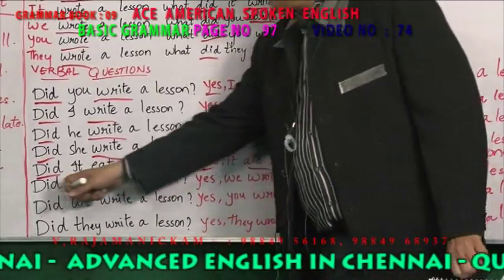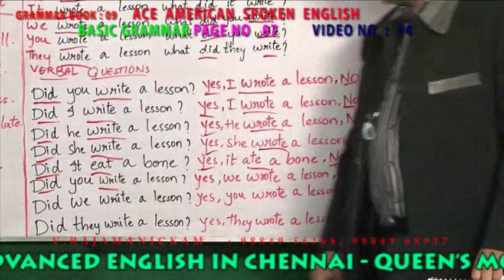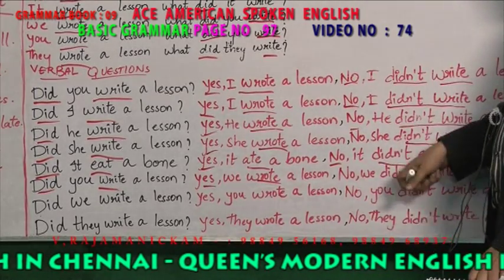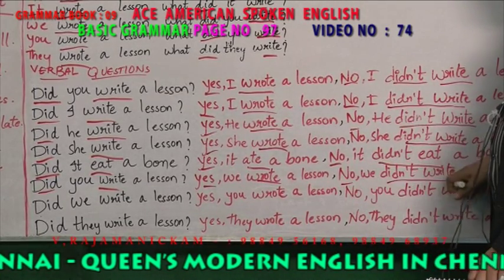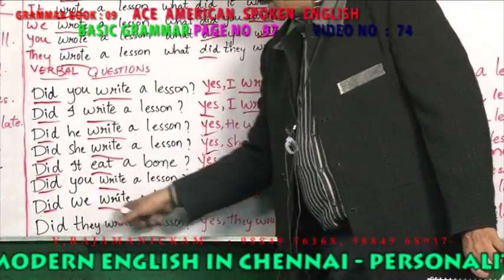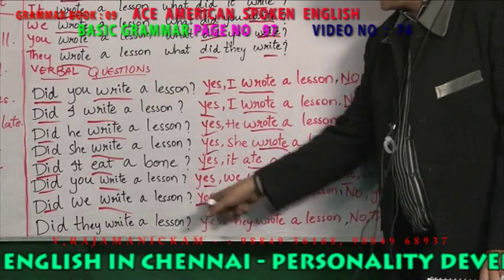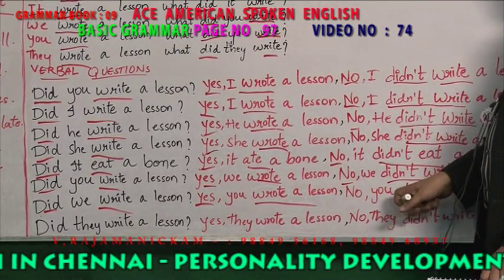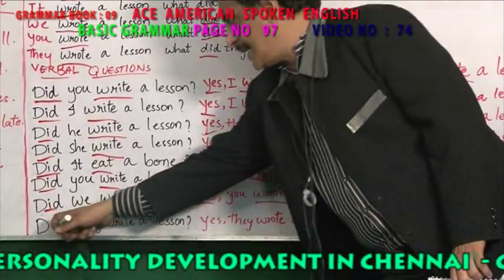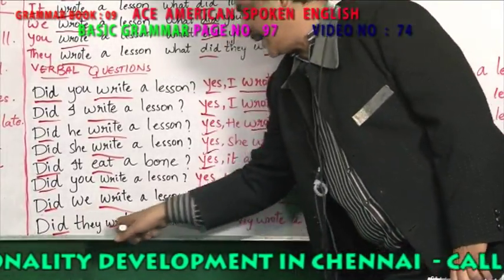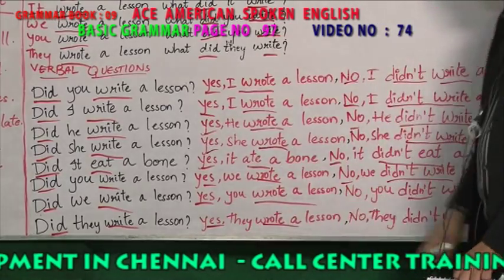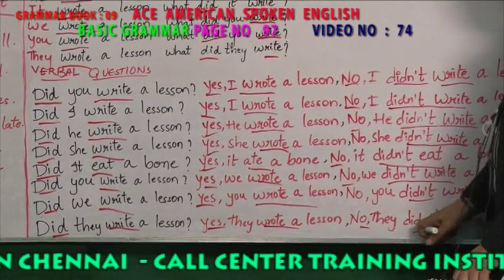Did you write a lesson? Did and write. Yes, we wrote a lesson — past tense. No, we didn't write a lesson. Did we write a lesson? Yes, we wrote a lesson. No, you didn't write a lesson. Did they write a lesson? Yes, they wrote a lesson. No, they didn't write a lesson.